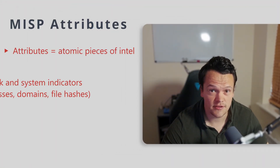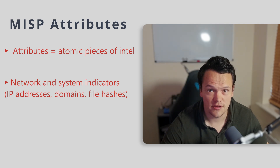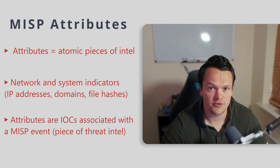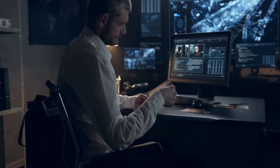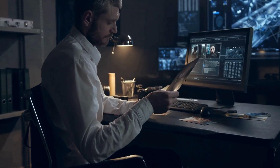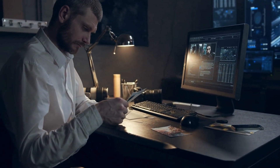MISP attributes are atomic pieces of intelligence such as network indicators like IP addresses, domains and URLs, system indicators like a string in memory or a file hash, or even Bitcoin wallets. They're usually represented as indicators of compromise or IOCs, which are associated with a larger piece of threat intelligence like a MISP event. During your incident response, threat hunting or security research, you'll want to search through these attributes and find IOCs related to your investigation, usually to provide more context so you can make an informed decision about your next investigation step.